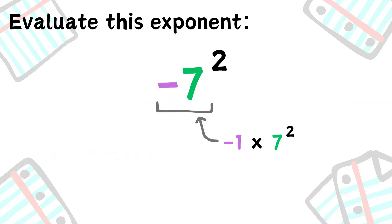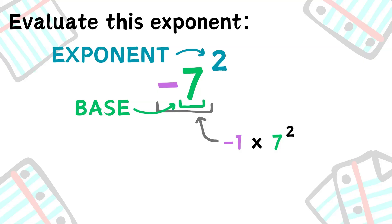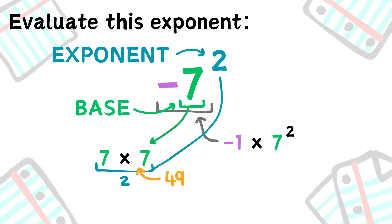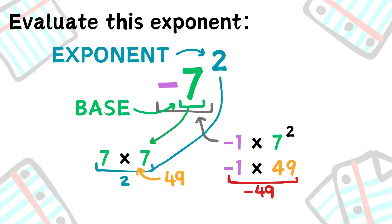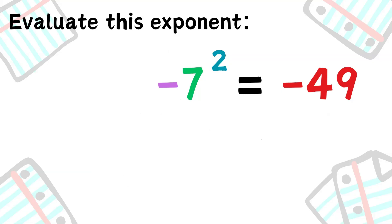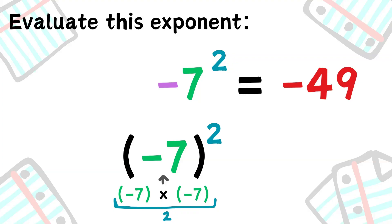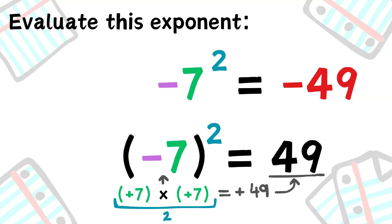So let's first find 7 squared. 7 is the base and 2 is the exponent, so we multiply 7 twice, which gives us 49. Now we find negative 1 times 49, which is negative 49. If we had used negative 7 as the base, we would have gotten negative 7 times negative 7 — the negative signs would cancel out, leaving us with positive 49, which is an incorrect answer.